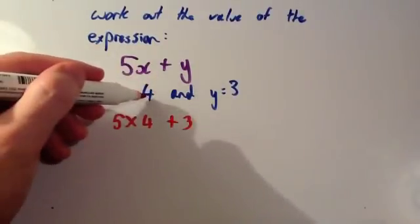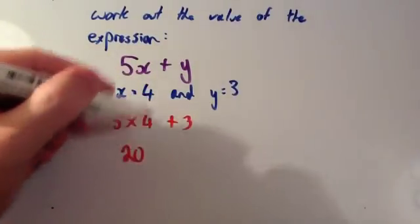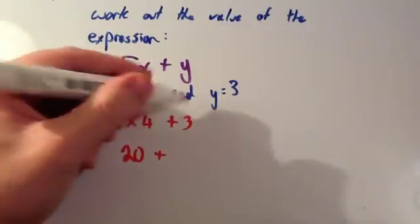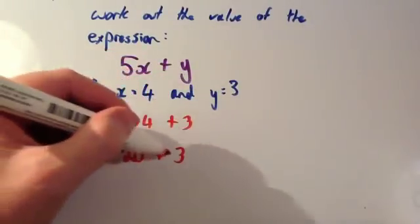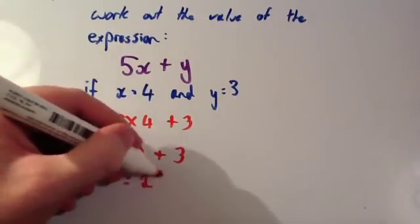So 5 times x, 5 times 4 is 20. And we're going to add on y, which was 3. So we're going to do 20 plus 3. 20 plus 3 is 23.